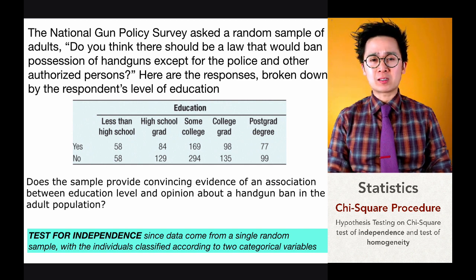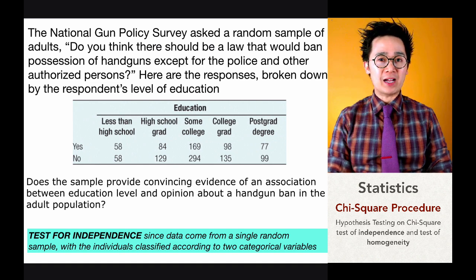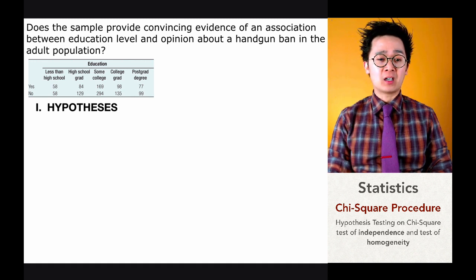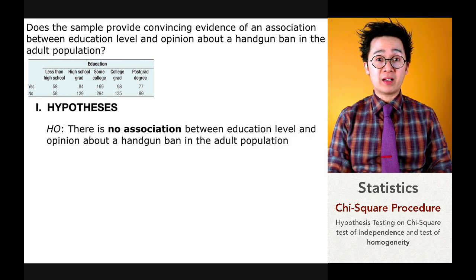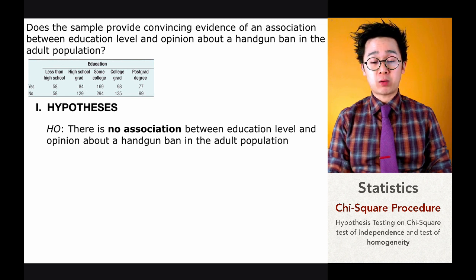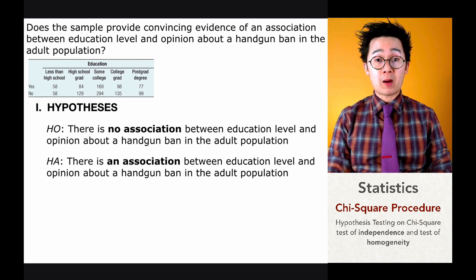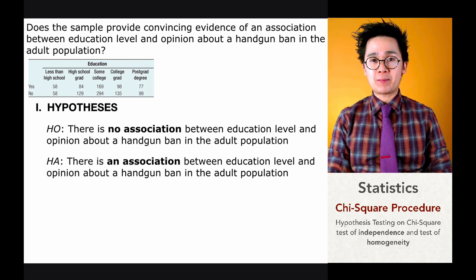When writing the null and alternative hypothesis, we usually find the cue in the last sentence or paragraph of the case. The question is: does the sample provide convincing evidence of an association between education level and opinion about a handgun ban in the adult population? So the null hypothesis is: there is no association between education level and opinion about handgun ban in the adult population. The alternative hypothesis is: there is an association between education level and opinion about handgun ban in the adult population. Since the significance level is not given, we assume alpha is 0.05.